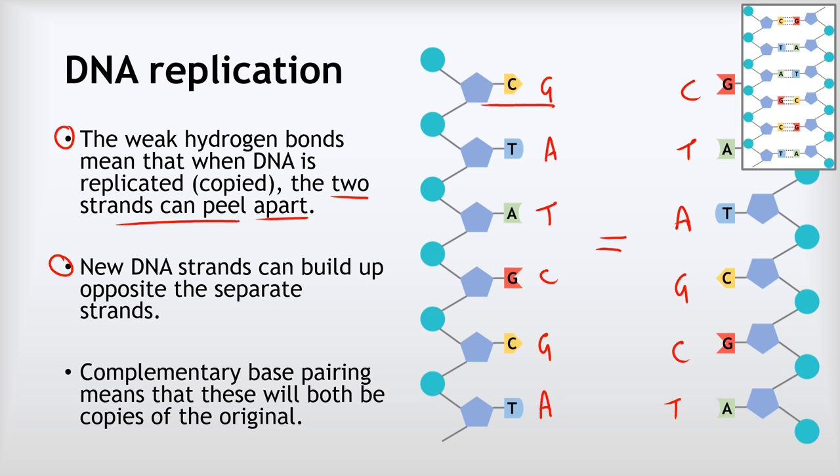Because of the way the complementary base pairing works, this means that both of these copies will be identical to the original molecule that we had in the first place. So if we look here, we've got CG on the original one. If we look here, TA on the second one, also TA, and that's the same as what our original one was. So this is a really clever thing. This is why DNA is found such wide use in living things, because it can make copies of itself.